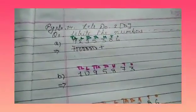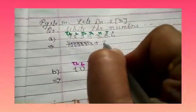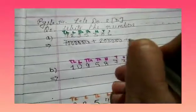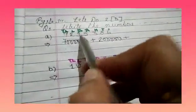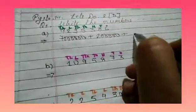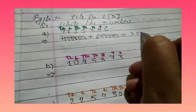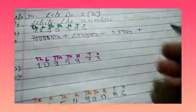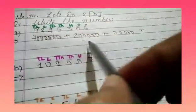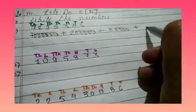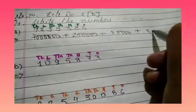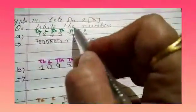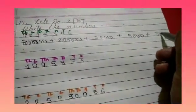Plus 2 is at the lakh position, so 2 is having 5 zeros: 1, 2, 3, 4 and 5. Plus 9 is at the 10,000 position, so we will write 9 with 1, 2, 3, 4 zeros. Plus 5 is at the 1000 position, so we will write 5 with 1, 2 and 3 zeros. Plus 8 is at the 10th position, so we will write 80.